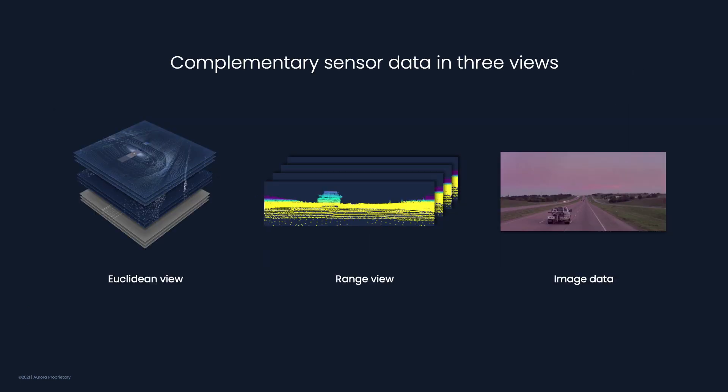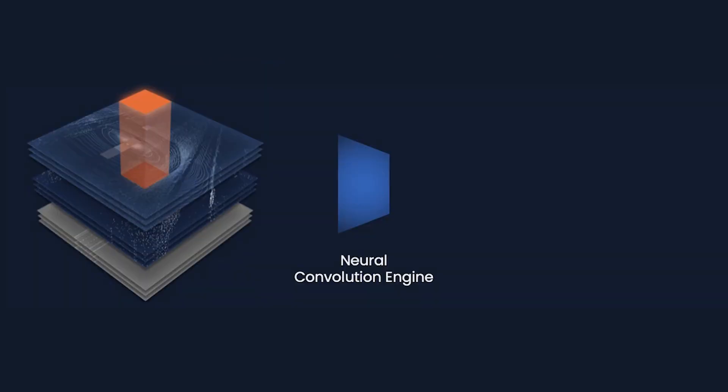The result, from just the raw data inputs, is that we have complementary sensor data in three views: Euclidean view, range view, and the camera image. Each view contains valuable and unique information that will ultimately contribute to a holistic representation of the Aurora driver's surroundings. To extract that valuable information from each view, these data inputs are put through what we call a neural convolution engine, which harnesses the power of deep learning to process the incoming sensor data.